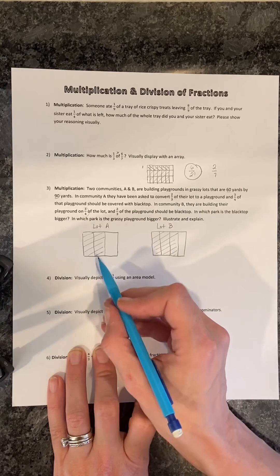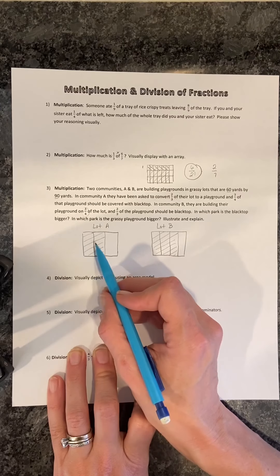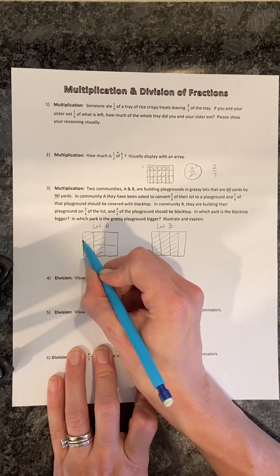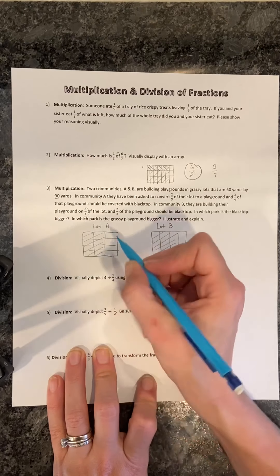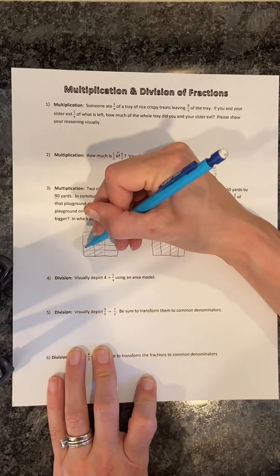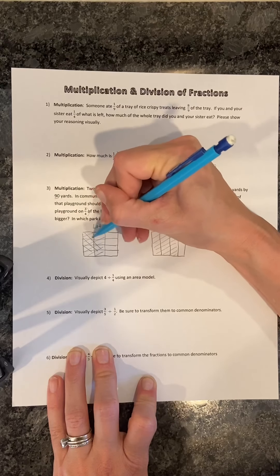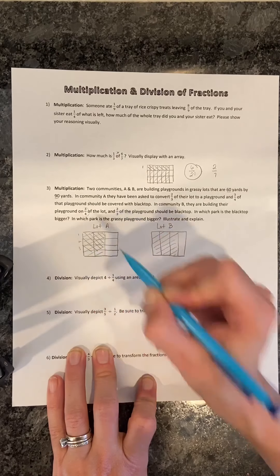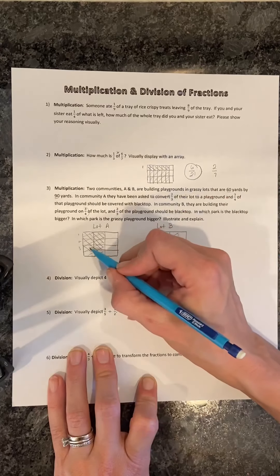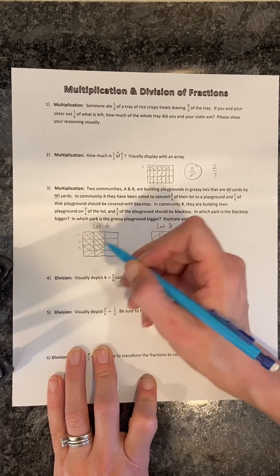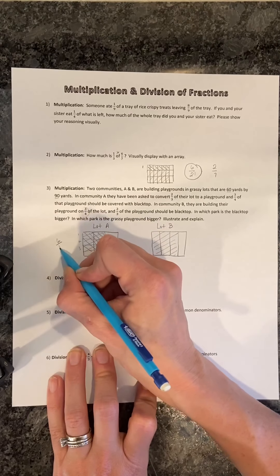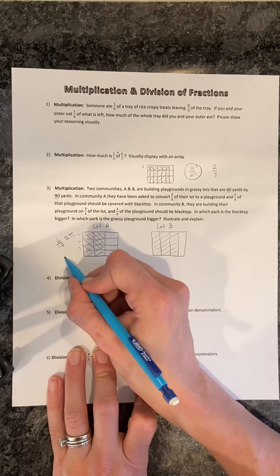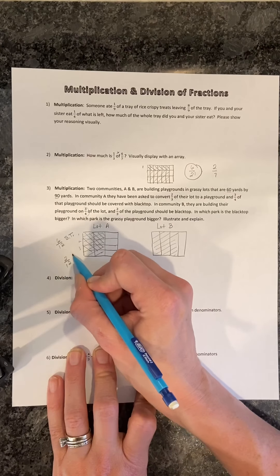Now we know that in lot A, three-fourths of this two-thirds will be blacktopped. So we're going to go ahead and split this into fourths. And we know that three-fourths of it will be blacktopped. So you notice that I shaded one, two, three of those rows across. And I now have six rectangles out of a total 12 shaded in. That will be my blacktop. The leftover amount, the two-twelfths, that will be my grass.